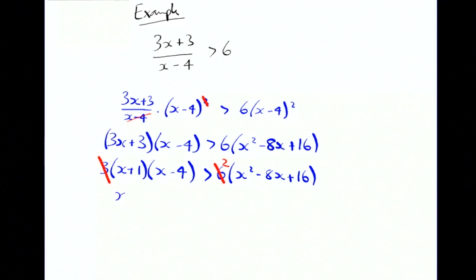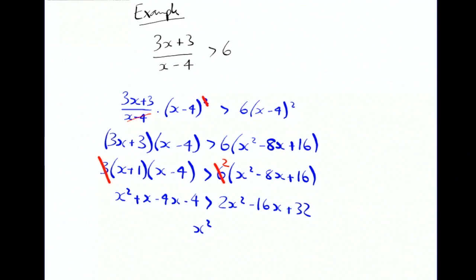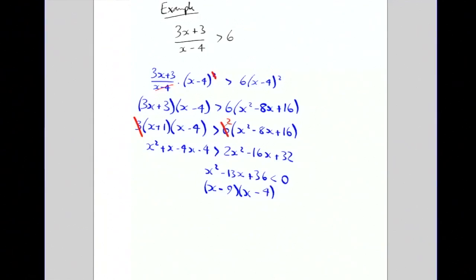Cancel the 3s — the 6 becomes a 2. Multiplying out: x squared plus x minus 4x minus 4 is greater than 2x squared minus 16x plus 32. Moving everything to the same side to keep the x squared positive, we get x squared minus 13x plus 36 is less than 0. Factorising — a nice easy factorisation — that's x minus 9 times x minus 4 is less than 0. Drawing a quick sketch with roots at 4 and 9, a happy quadratic, we're wanting this to be less than 0 — that's the sandwich bit in the middle.